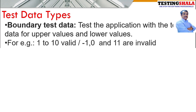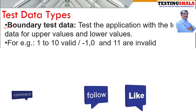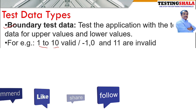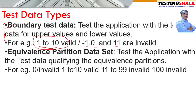The next type is boundary test data, where we test for boundary conditions. For example, if a particular field can only accept numbers one to ten, we will test it for minus one, zero, and eleven. We test all boundary combinations to see whether that field handles all boundary conditions and gives the right error messages.